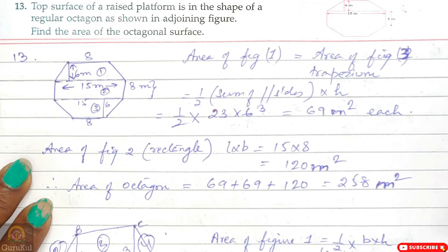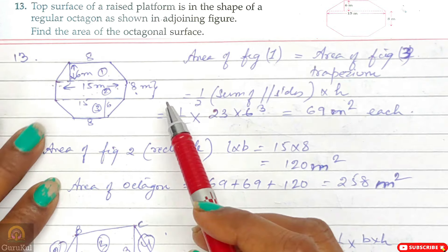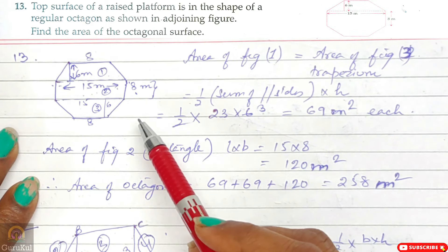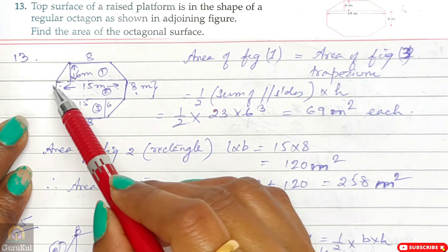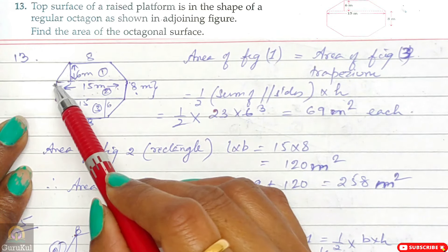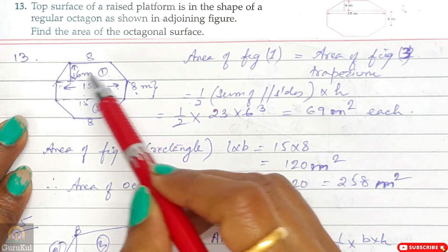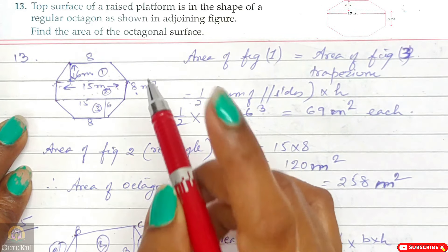Question number 13: The top surface of a raised platform is in the shape of a regular octagon — having 8 equal sides. Find the area of the octagonal surface. One side is 8 meters, the total width from one end to the other is 15 meters, and the height of the trapezoidal portions is 6 meters. We divide the figure into 3 parts.